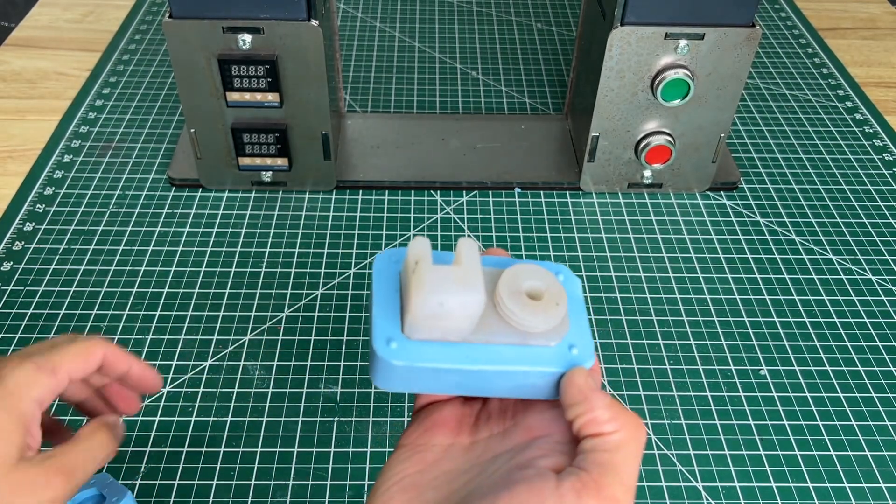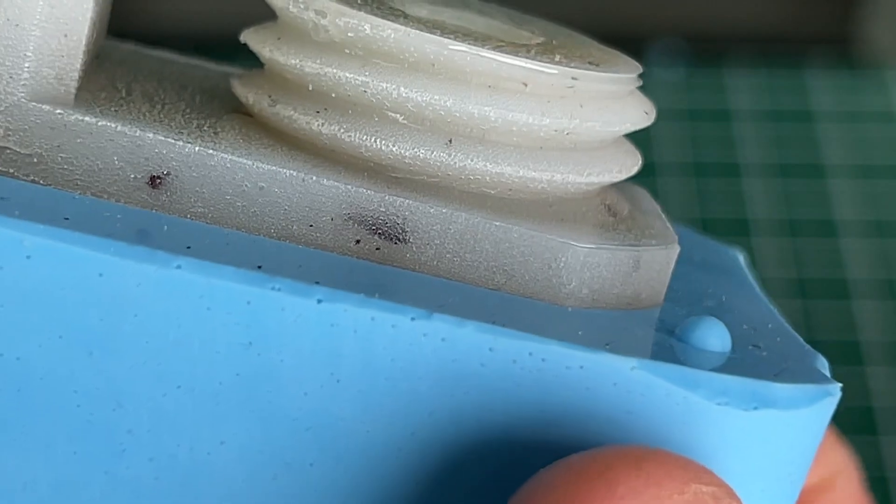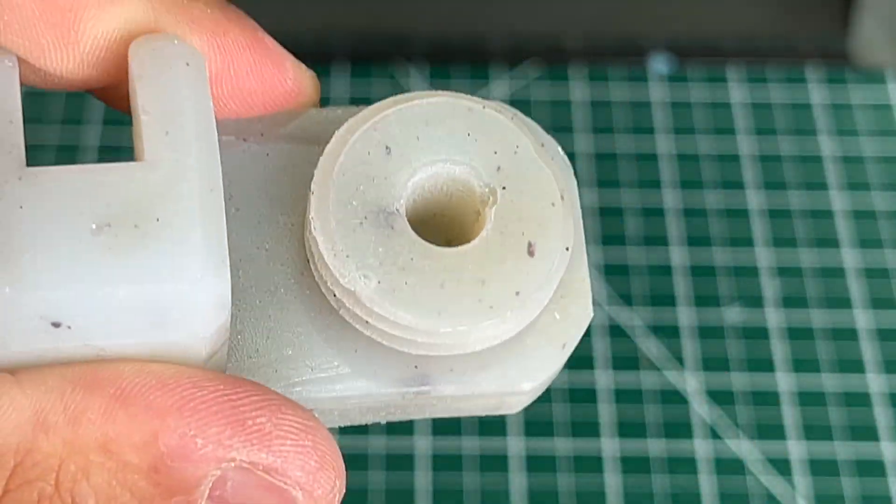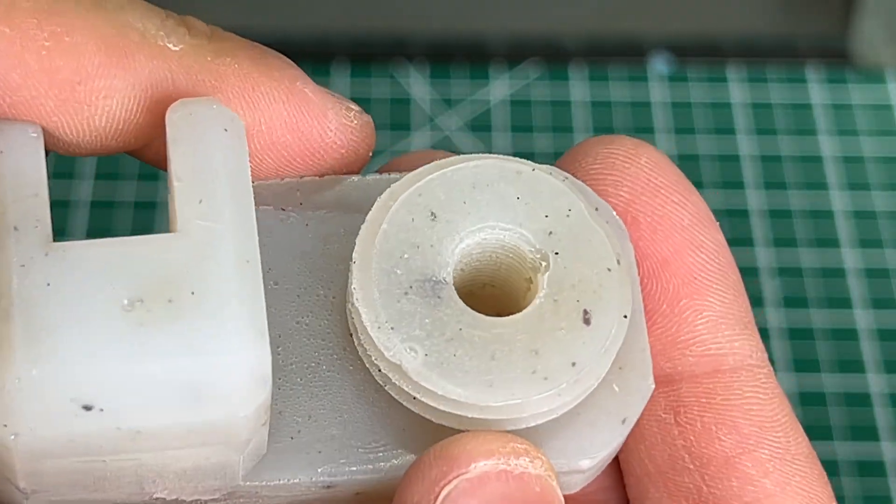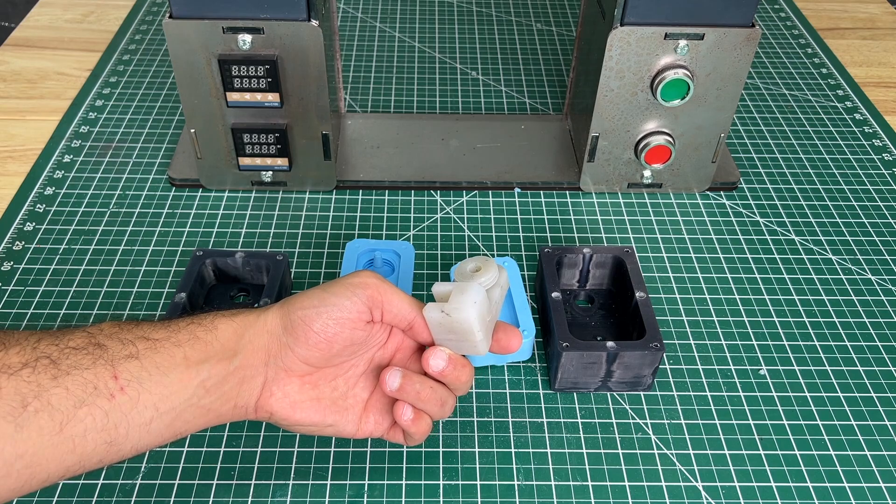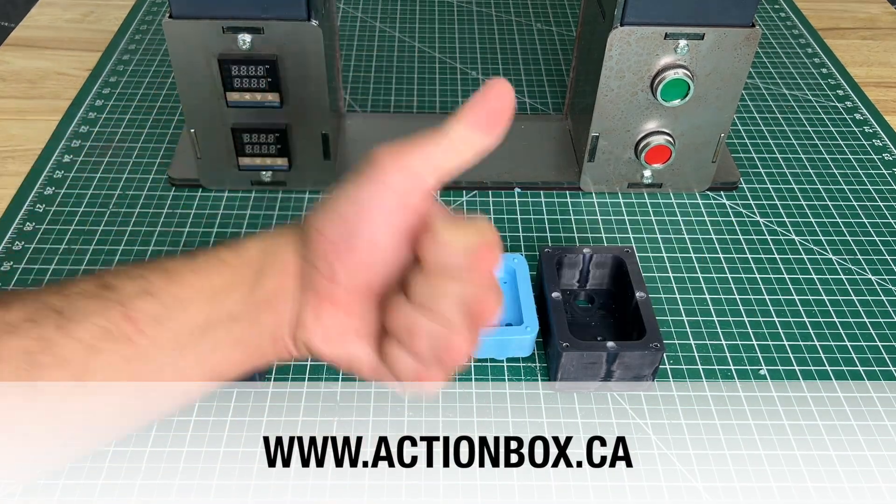We were super impressed by the quality, especially with hot glue, since it's such an easily accessible and easy to work with material for prototyping. So there you have it. If you're interested in buying an Injecto 2.0 kit, visit actionbox.ca. Don't forget to subscribe, and we'll see you next time.